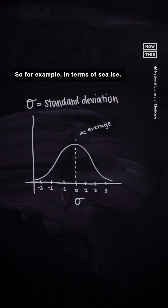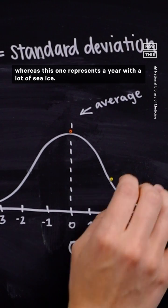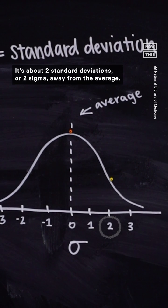So, for example, in terms of sea ice, this data point would be roughly the average, whereas this one represents a year with a lot of sea ice. It's about two standard deviations, or two sigma, away from the average.